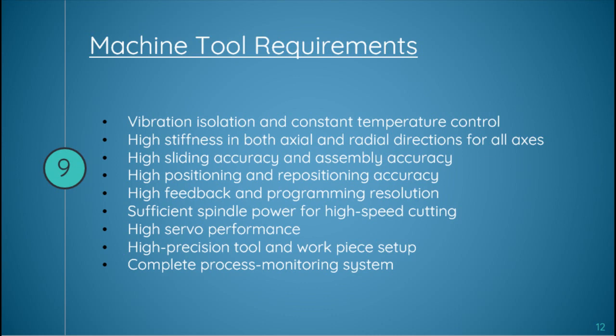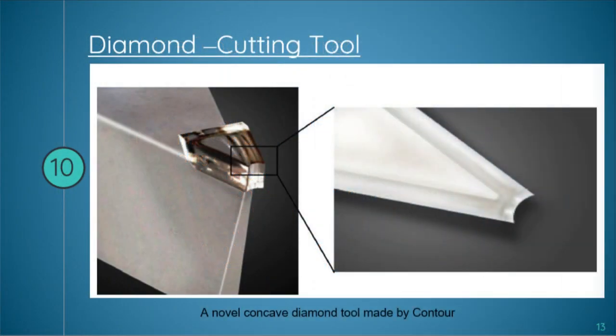Diamond turning is performed with cutters made of diamonds — either natural or synthetic — which are carefully ground and polished to generate geometrically defined cutting edges at specific crystallographic orientations for material removal. The cutting performance and surface finish produced by diamond turning rely greatly on the edge sharpness of the diamond cutter. Edge sharpness is quantitatively defined as the tool edge radius r, which is a governing factor of the process. When the undeformed chip thickness approaches the size of r, the cutting edge radius significantly affects the mechanics and mechanism of chip formation. A novel concave diamond tool made by the company Contour is shown in the figure.